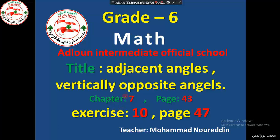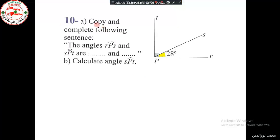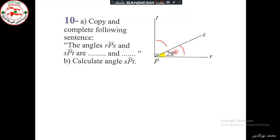Hello Grade 6, it's exercise 10 on page 47. Copy and complete the following sentence: the angle RPS and the angle SPT — what can we say about them? First, you can see that the angle RPS, the yellow one, is 28 degrees.